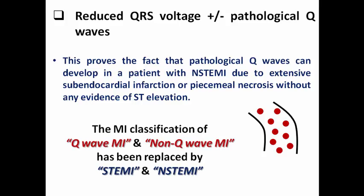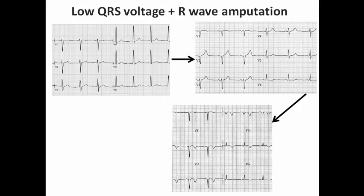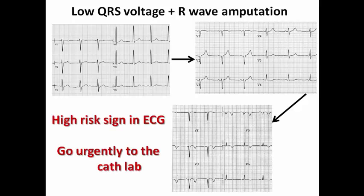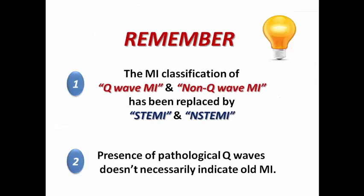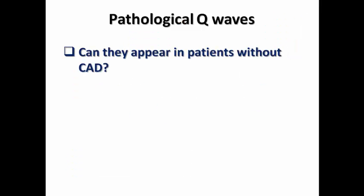That is why the old MI classification of Q-wave MI and non-Q-wave MI has been replaced by STEMI and non-STEMI. This ECG pattern in a non-STEMI patient is a high-risk sign and the patient needs to go urgently to the catheterization lab. Remember: the MI classification of Q-wave versus non-Q-wave is obsolete, and the presence of pathological Q-waves does not necessarily indicate old MI.